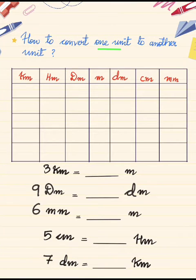How to convert one unit to another unit? To convert three kilometers in terms of meters, just put three under the kilometer and zero under the meter, and fill up the between boxes with zeros. Therefore, three kilometers is equal to three thousand meters.